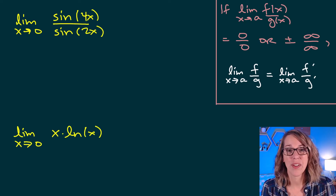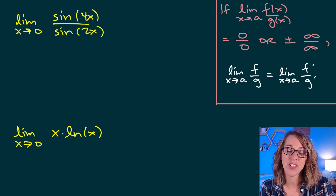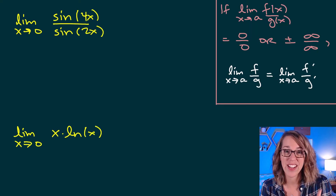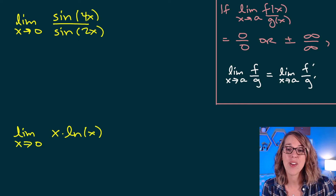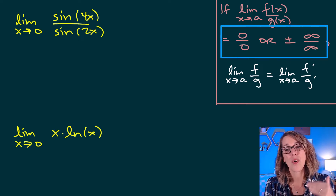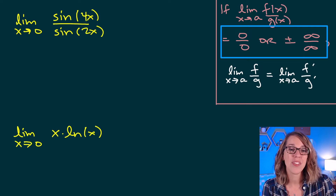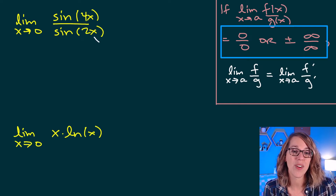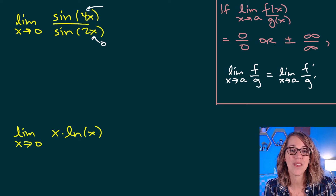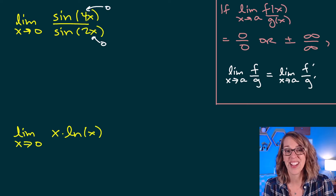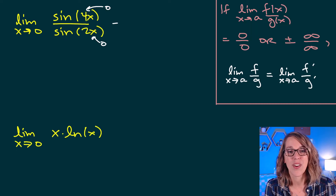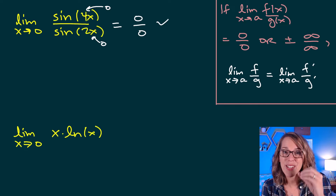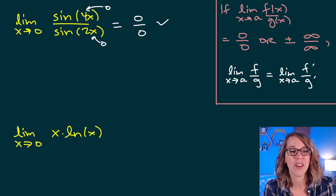Let's go through several examples of L'Hôpital's rule. It's a really easy one to apply, but the first thing I've got to look for is to make sure that it fits the condition of the rule — that means the limit goes to either 0 over 0 or infinity over infinity. With this first one, I'm approaching 0, so I put 0 into both sine functions and end up with sine of 0 over sine of 0. Both go to 0, giving 0 over 0, which is an indeterminate form, so L'Hôpital's rule applies.